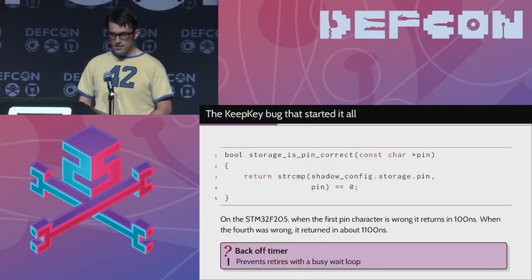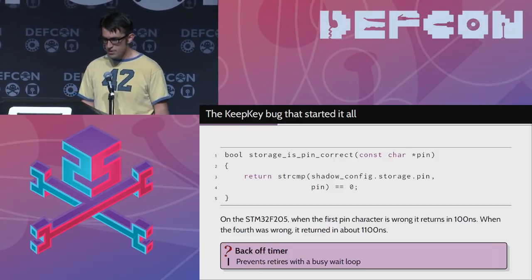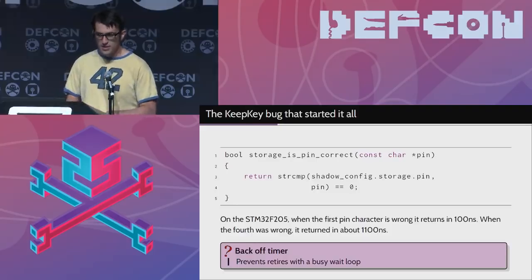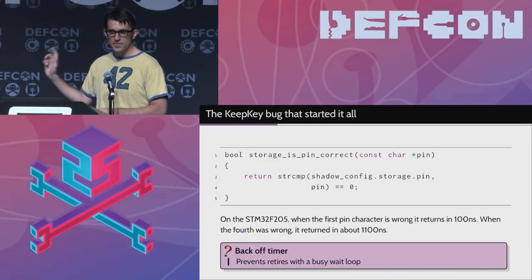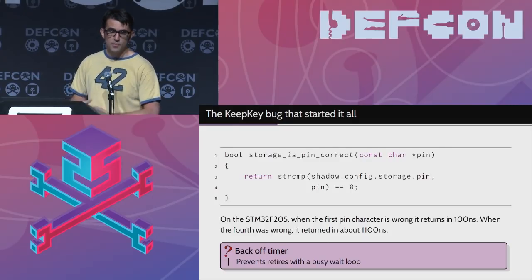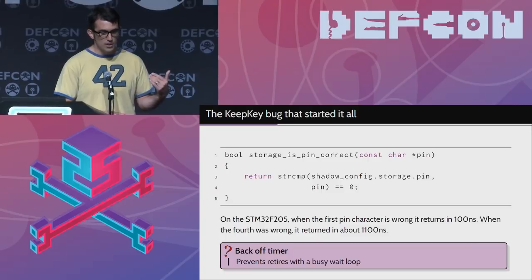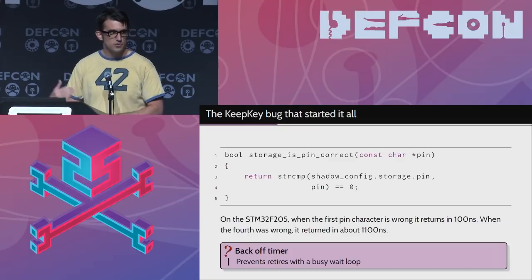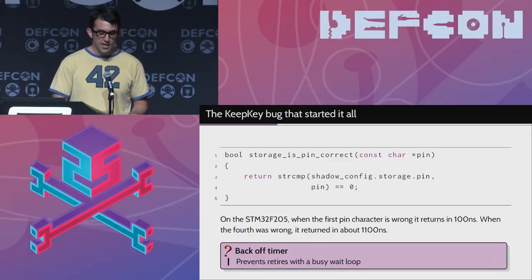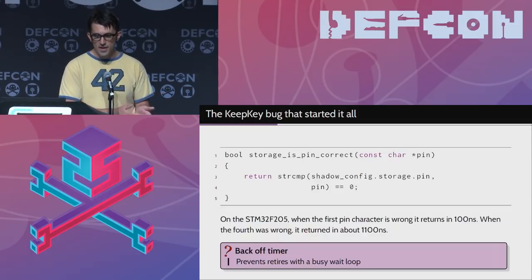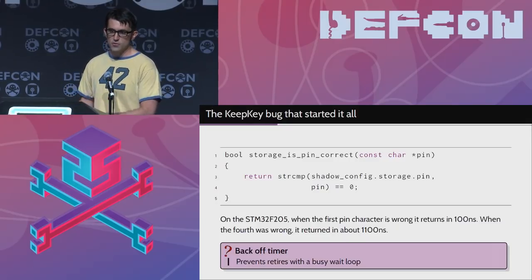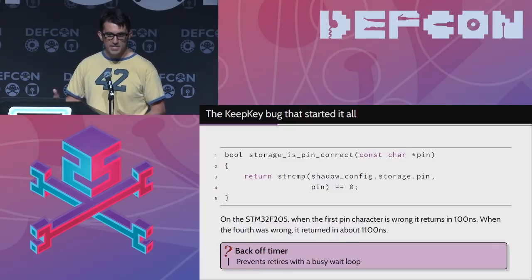The first thing we did — I got a KeepKey, took it apart, and looked up on GitHub and found a two-year-old bug from when they forked from Trezor that hadn't been fixed. String compare was being used to check the PIN. The PIN is the primary authentication mechanism to allow you to send funds on the device. That string compare fails on the first wrong character. If you measure with an oscilloscope, the first character being wrong fails in about 100 nanoseconds; if the fourth character is wrong, that's 1100 nanoseconds. So you can measure the time and guess the PIN. It doesn't really work in practice though, because of a backoff timer that makes you wait — by the eighth wrong attempt, you have to wait like a day.